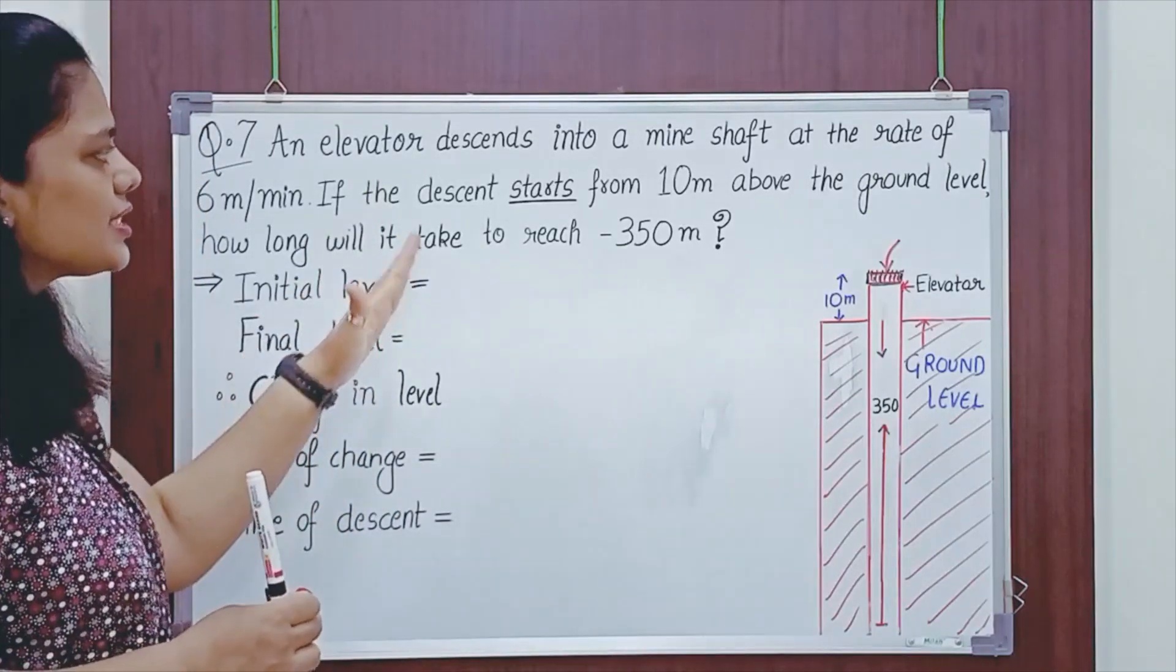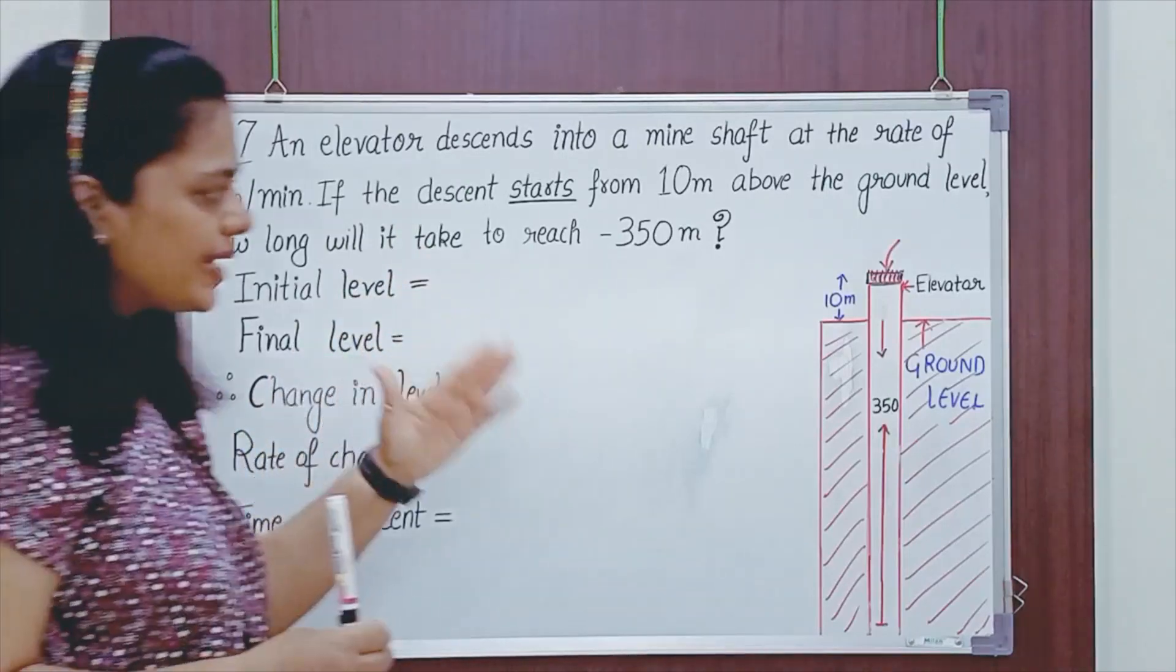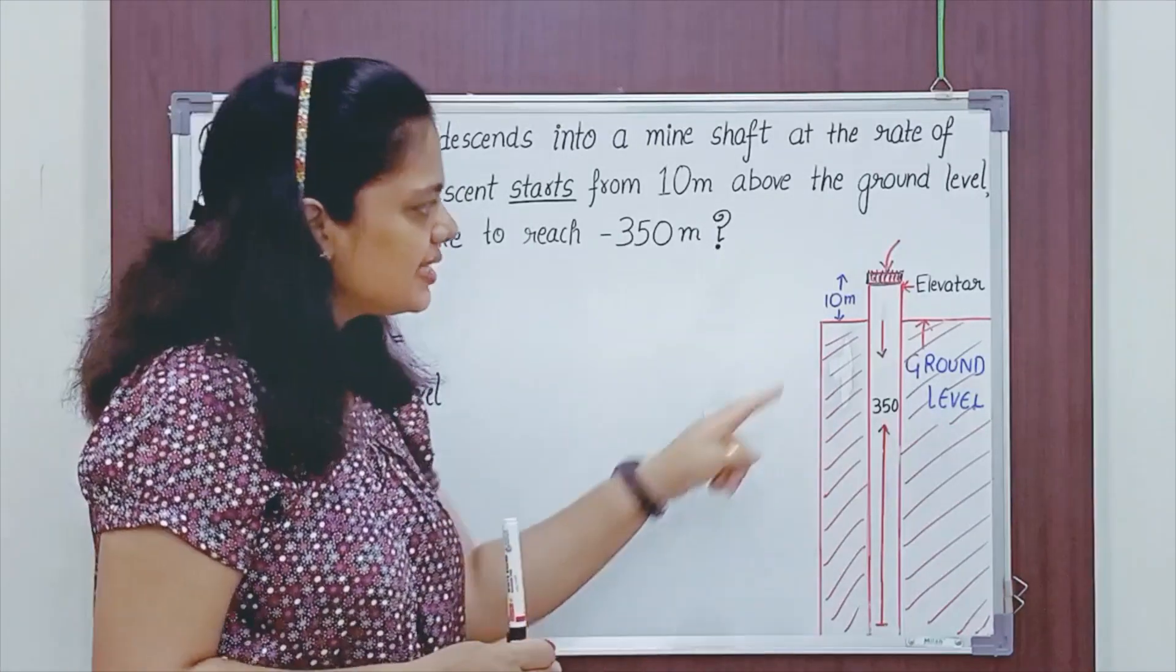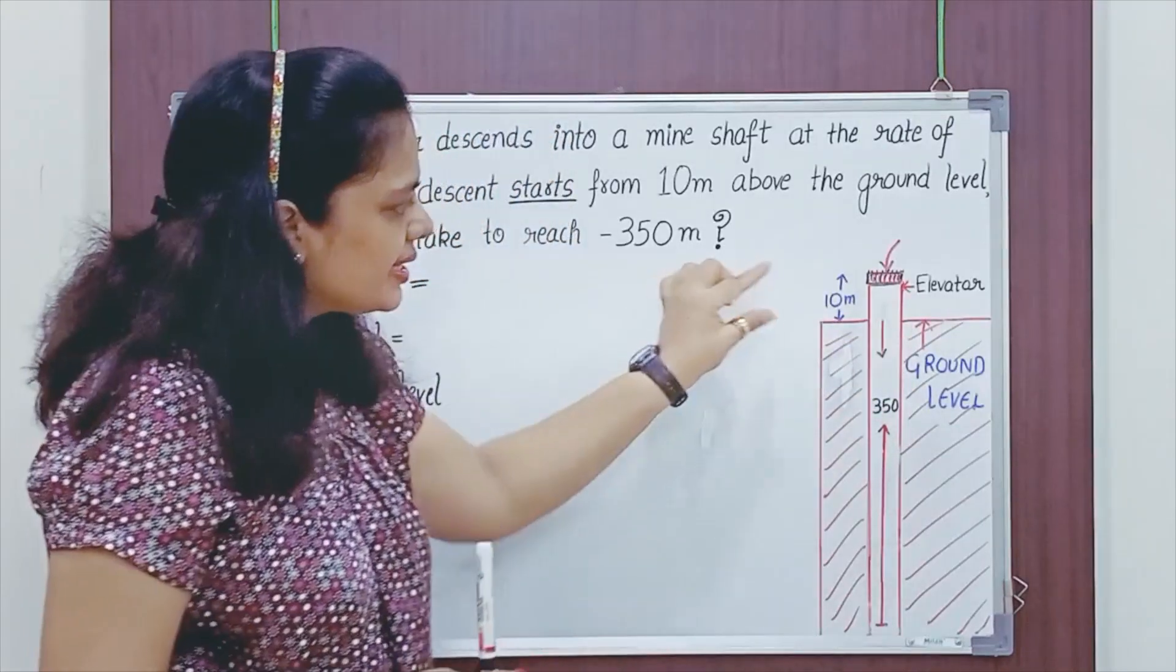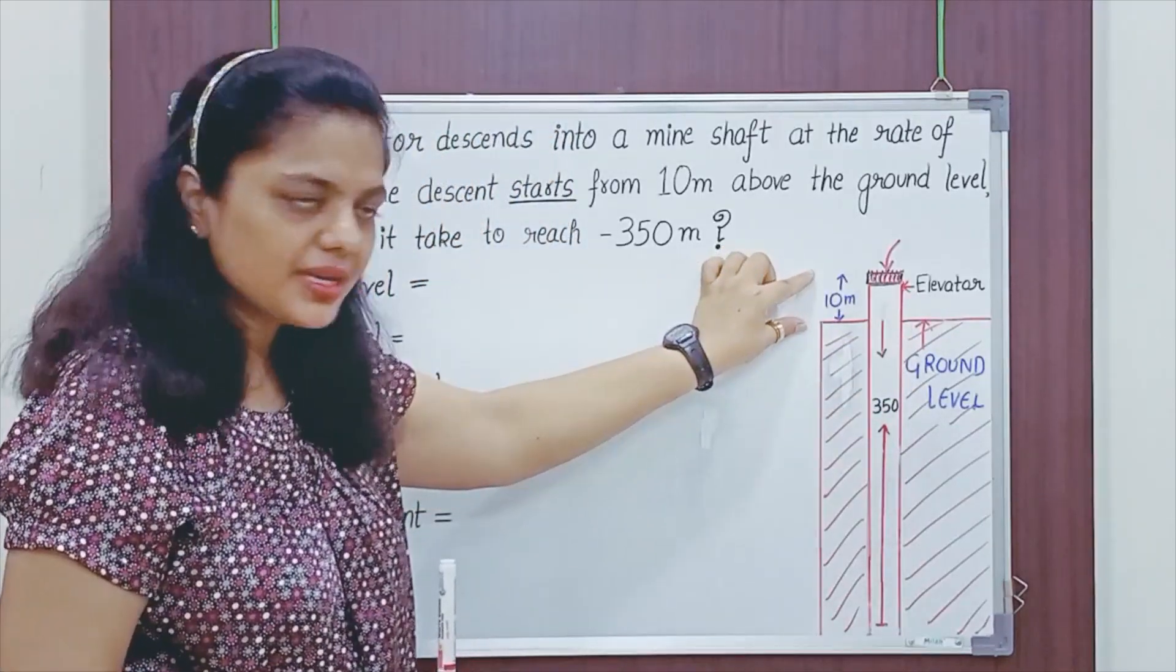Now to understand this problem more easily and to analyze it, I have drawn a figure. See, this is the elevator and this is the ground level. Currently the elevator is 10 meters above the ground level.